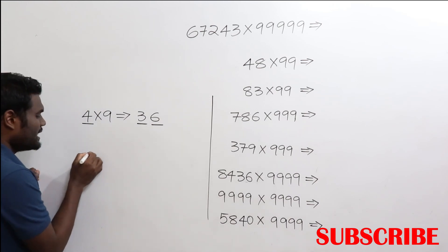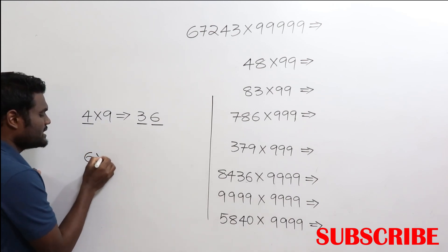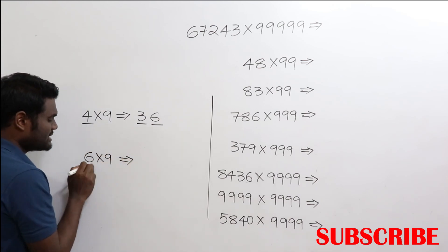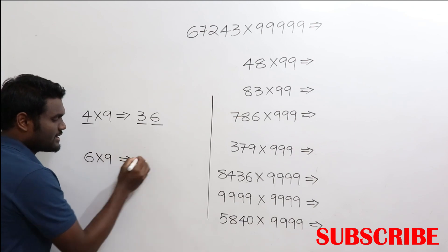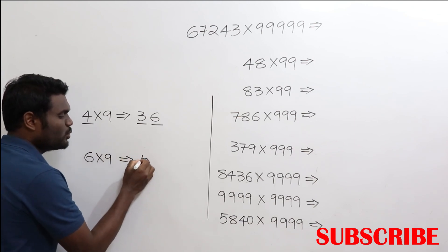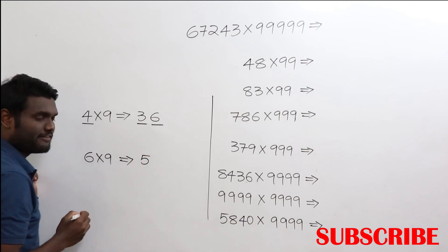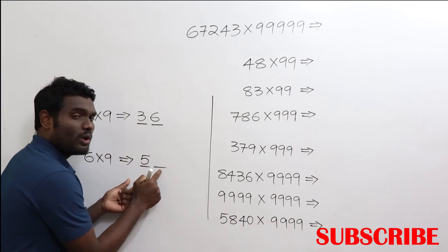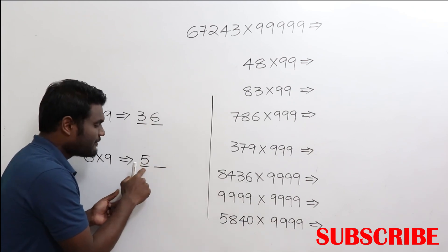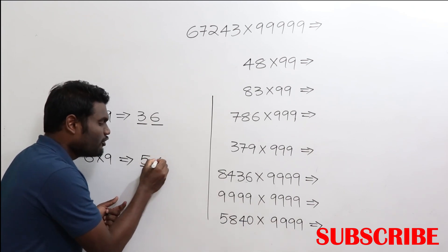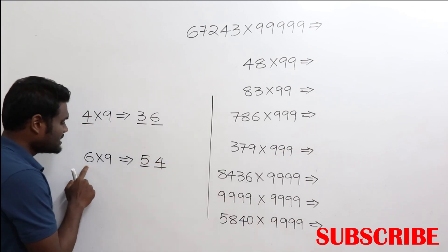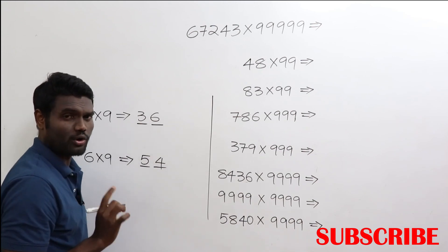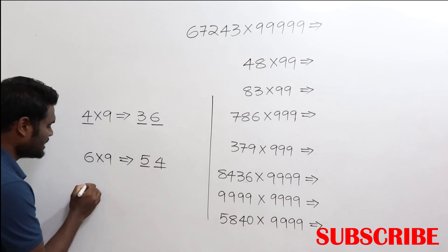One more example: 6 times 9. For 6, do one less — that gives you 5. For 5, how much more do I need to add to get 9? If I add 4 more I can get 9. So you can say that 6 times 9 is 54.